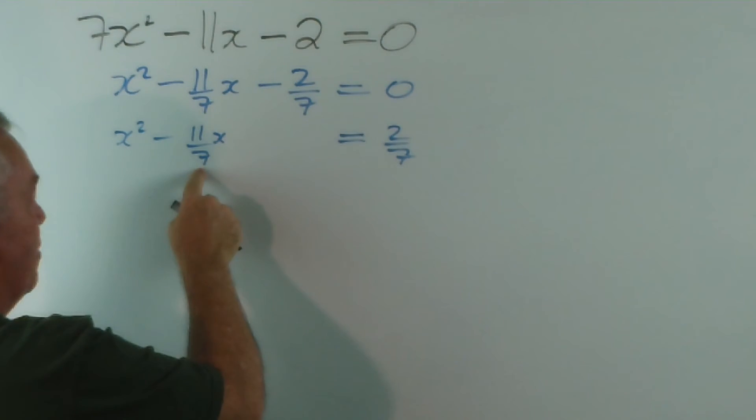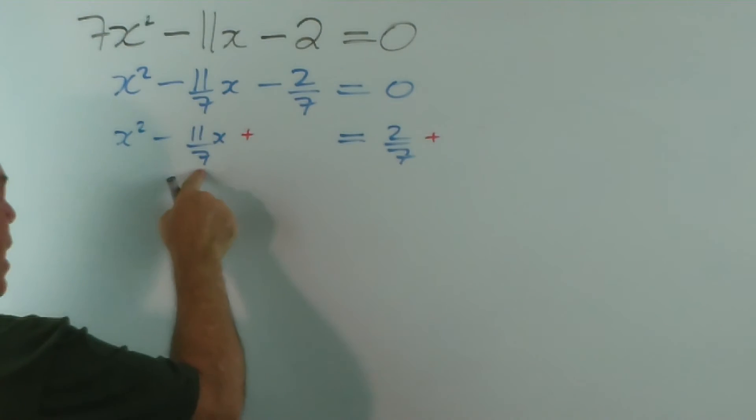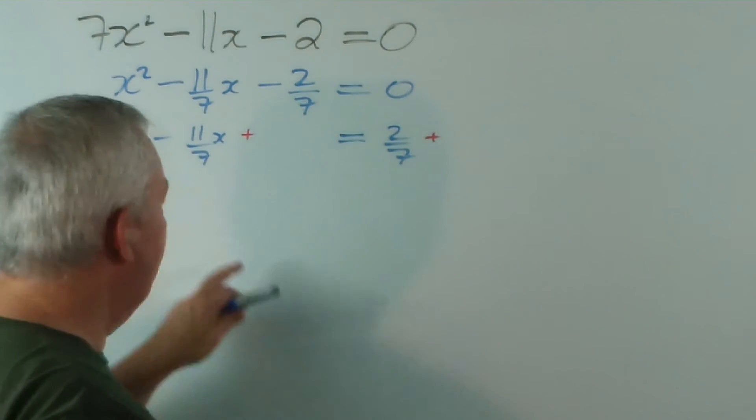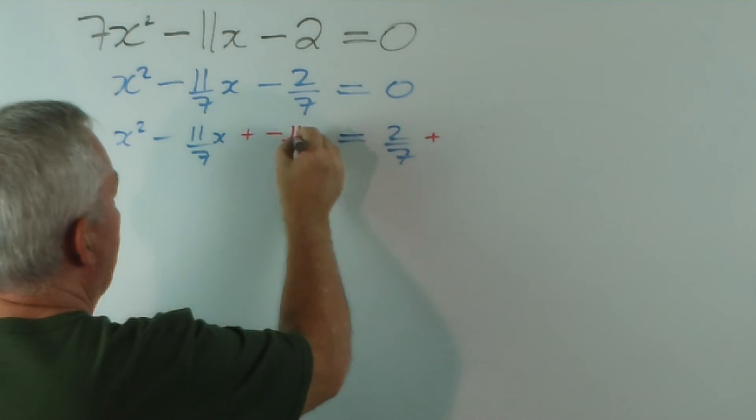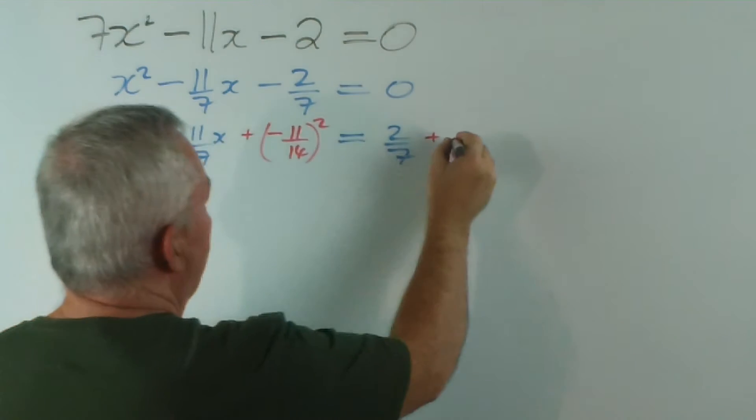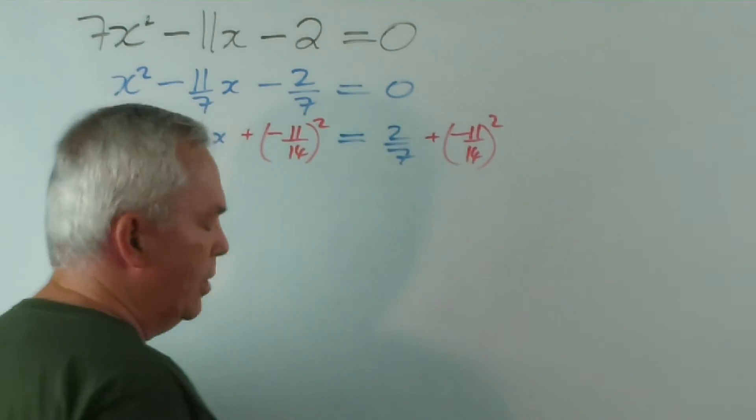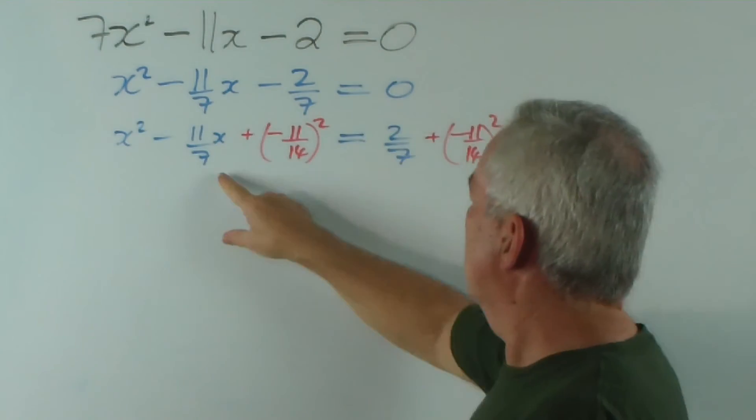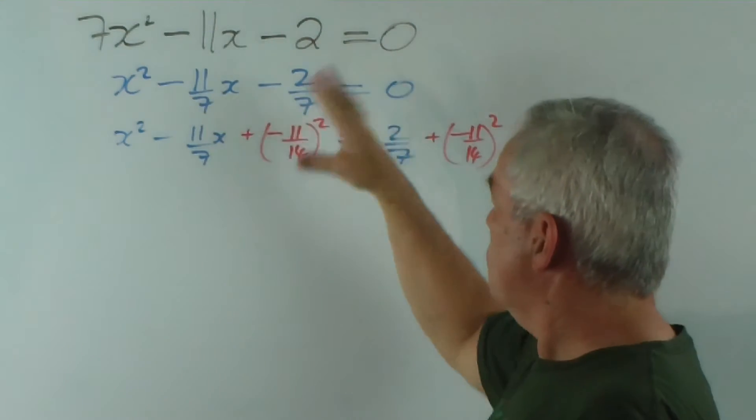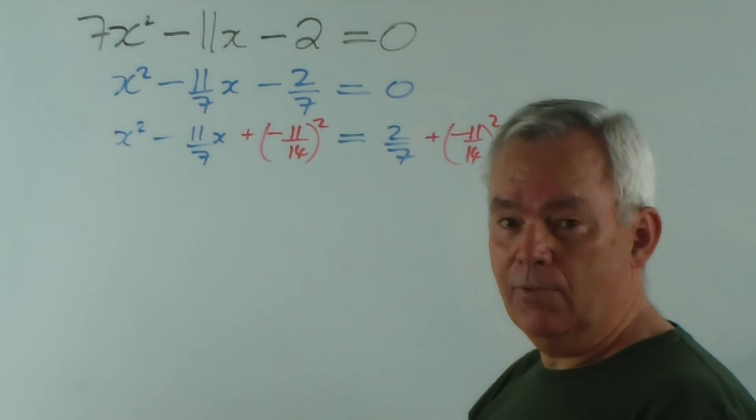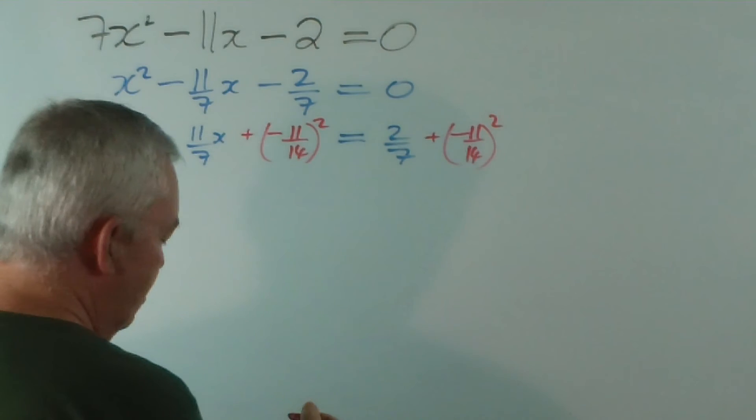The third step is to complete the square, and even that is easy. Remember, we find half of this, so we're going to add on something, and we find half of this and square it. Now, remember that finding half just means doubling the denominator, so I get negative 11 on 14. So, so far, the hardest thing I've had to do is do twice seven is 14. Even though it looks complicated, that's about the hardest calculation I've really had to do. If you were using decimals, it would be a bit more fiddly.